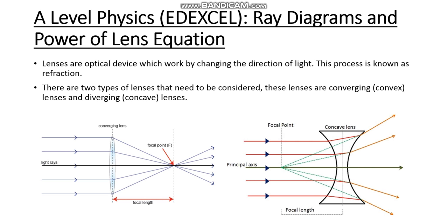Before we move on, we need to recap what lenses are. Lenses are optical devices which work by changing the direction of light. This process is known as refraction. There are two types of lenses that need to be considered: converging convex lenses and diverging concave lenses.